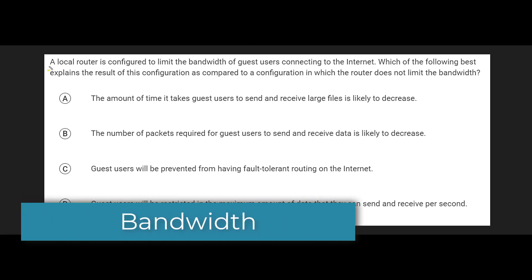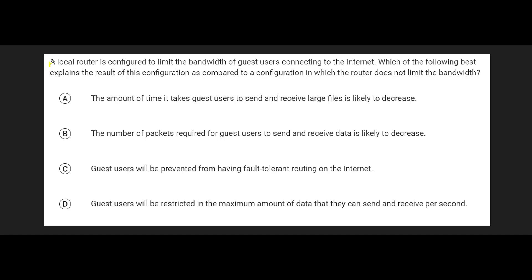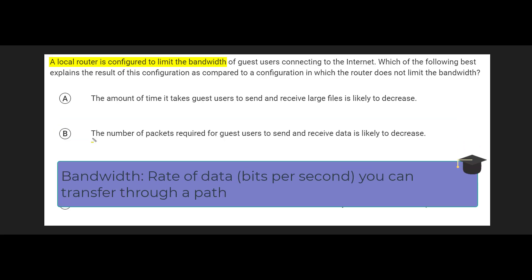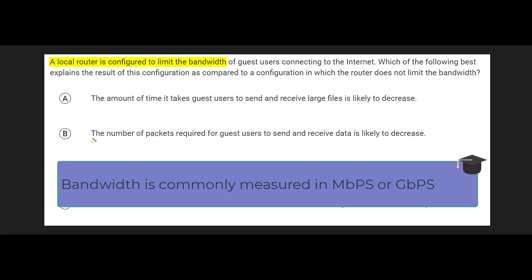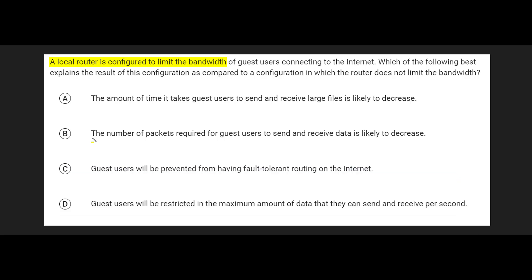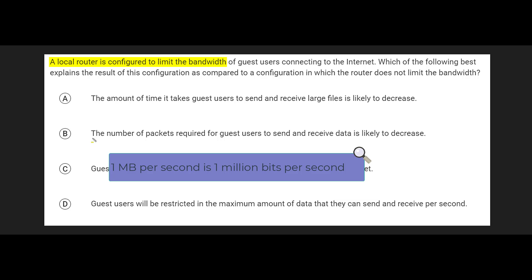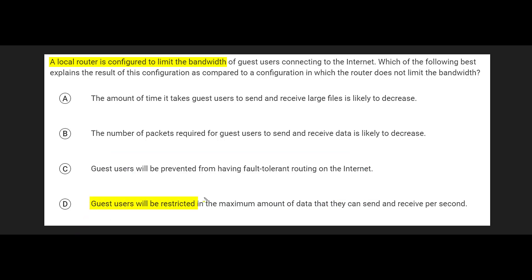This last question is a vocabulary one. A router is configured to limit bandwidth. Bandwidth is defined as the maximum rate of data that can be transferred across a specific path — for example, how much data you can transfer per second over a wire. It's usually measured in bytes per second or bits per second. Modern hardware measures this in kilobits, megabits, or gigabits per second. One megabit per second means one million bits per second. Based on that definition, the answer is D: guests would be restricted with the maximum amount of data they can send and receive per second — lower bandwidth means they receive less data per second.